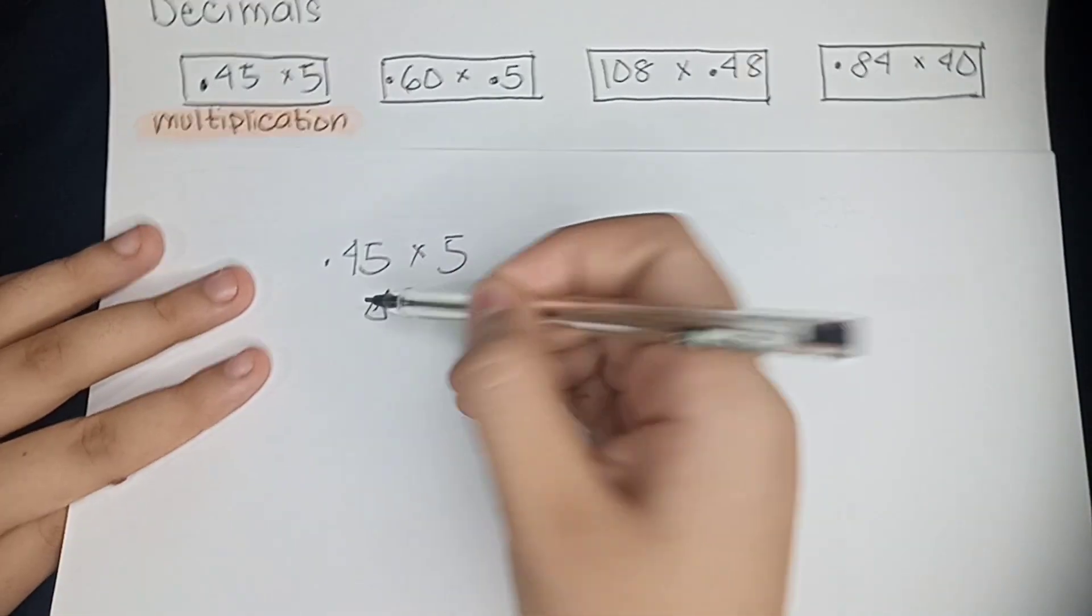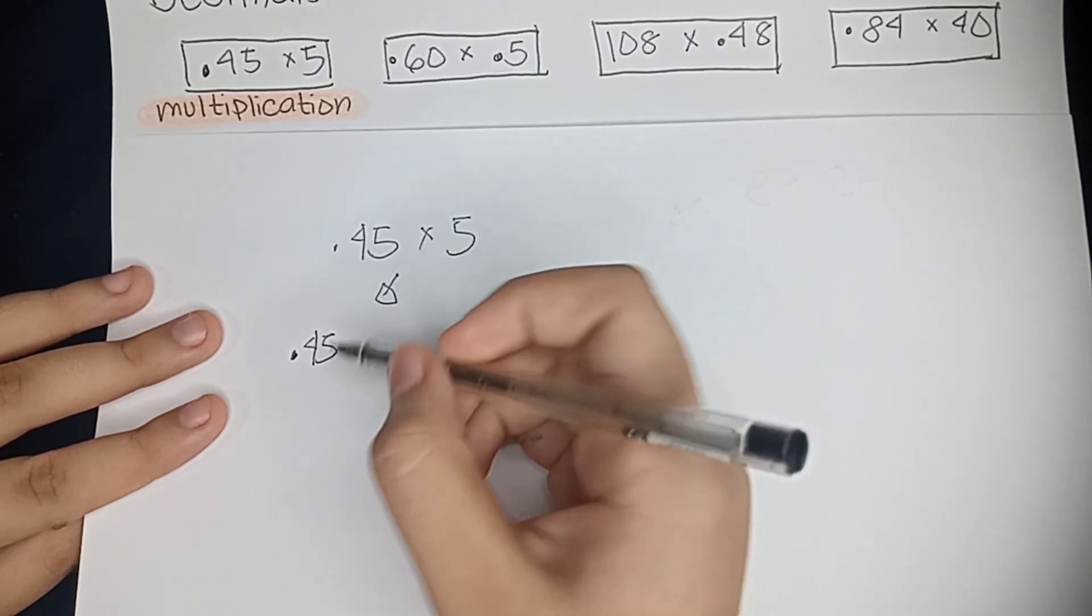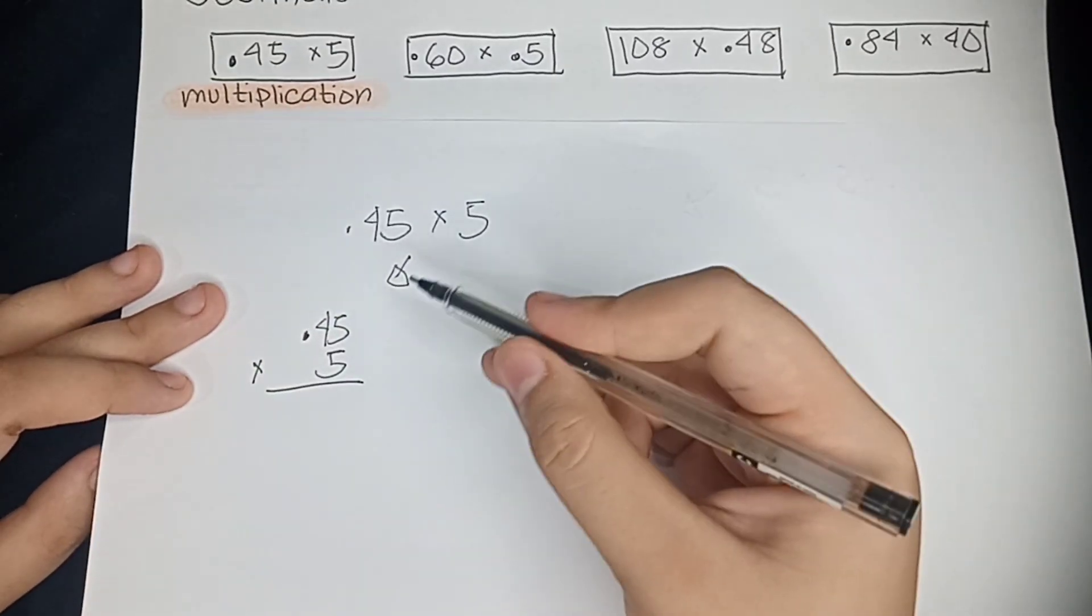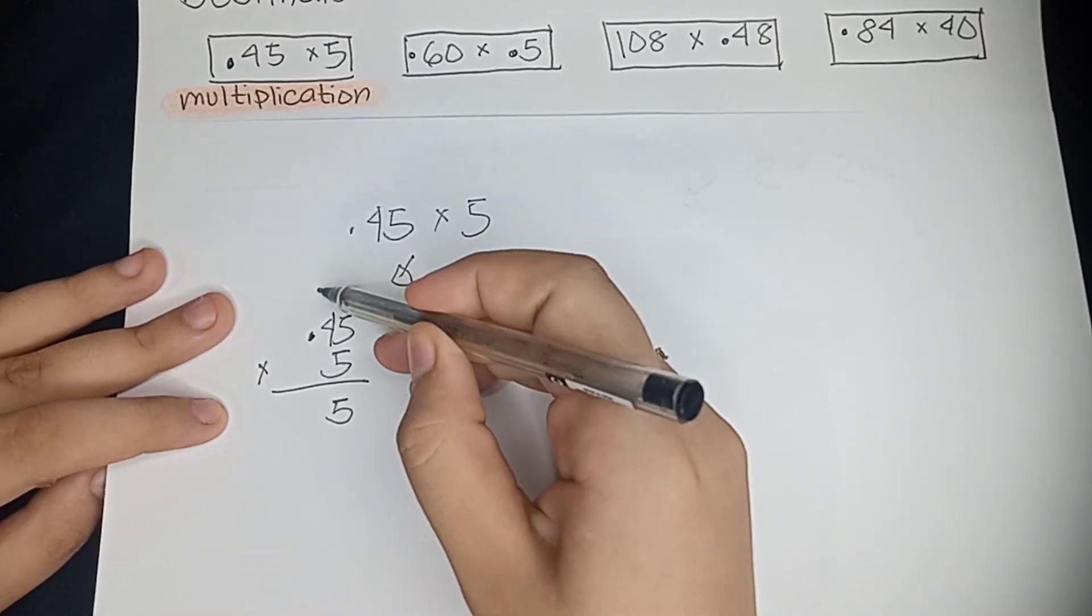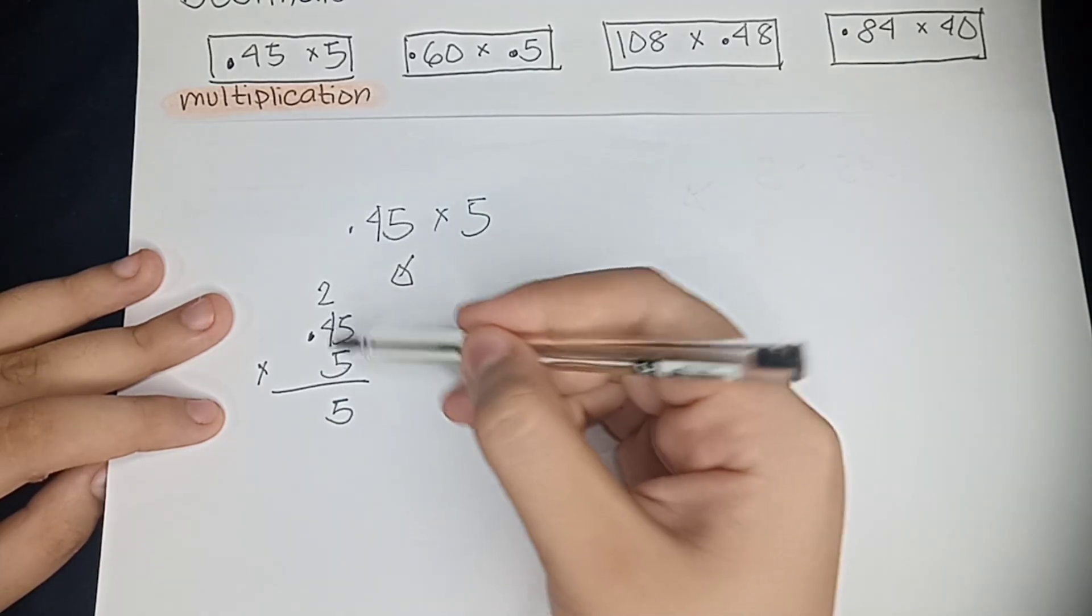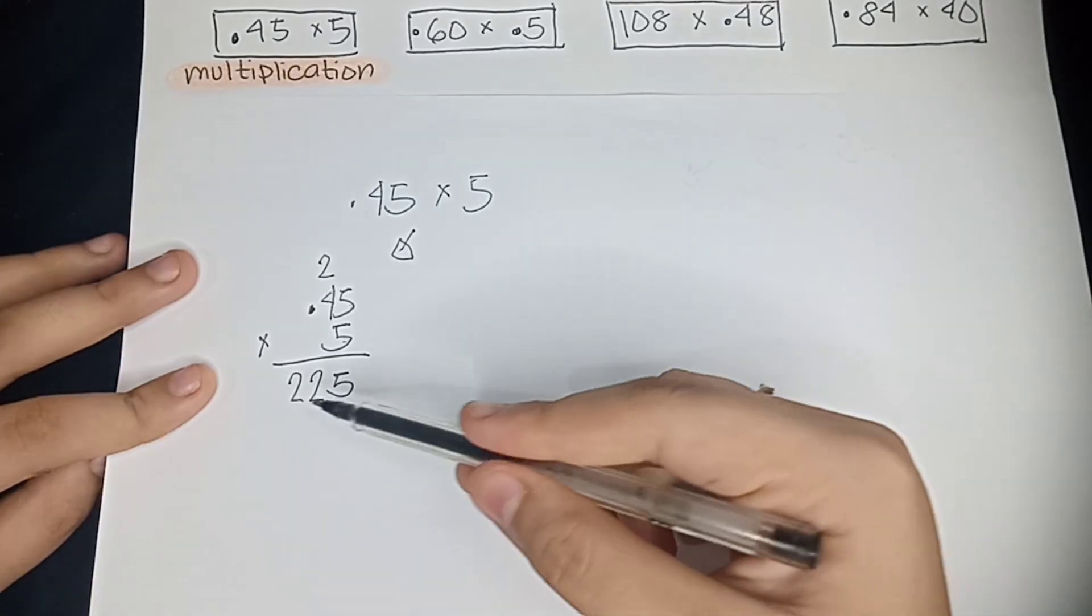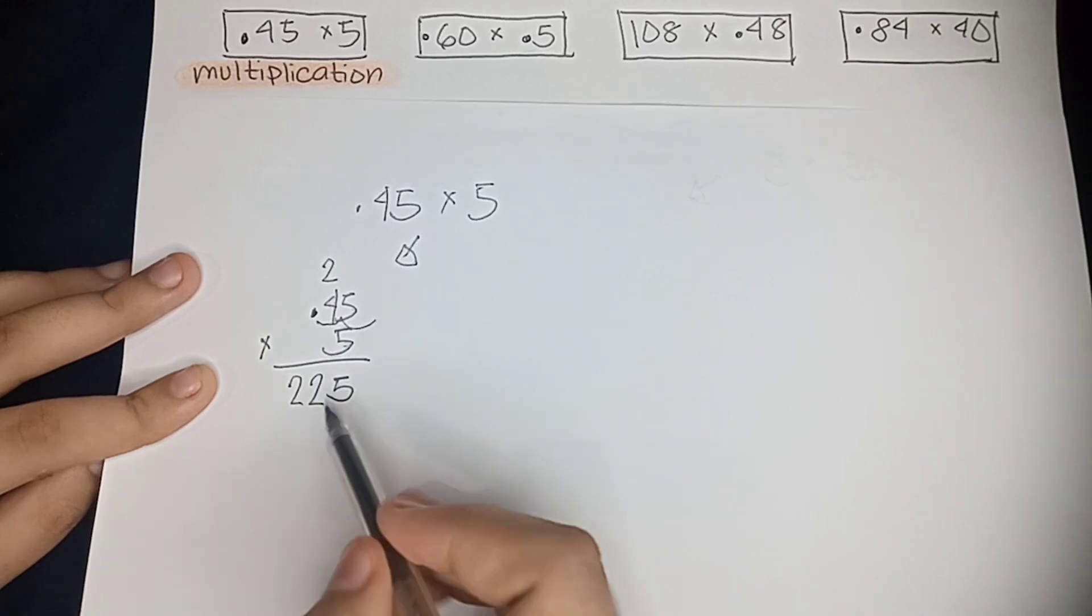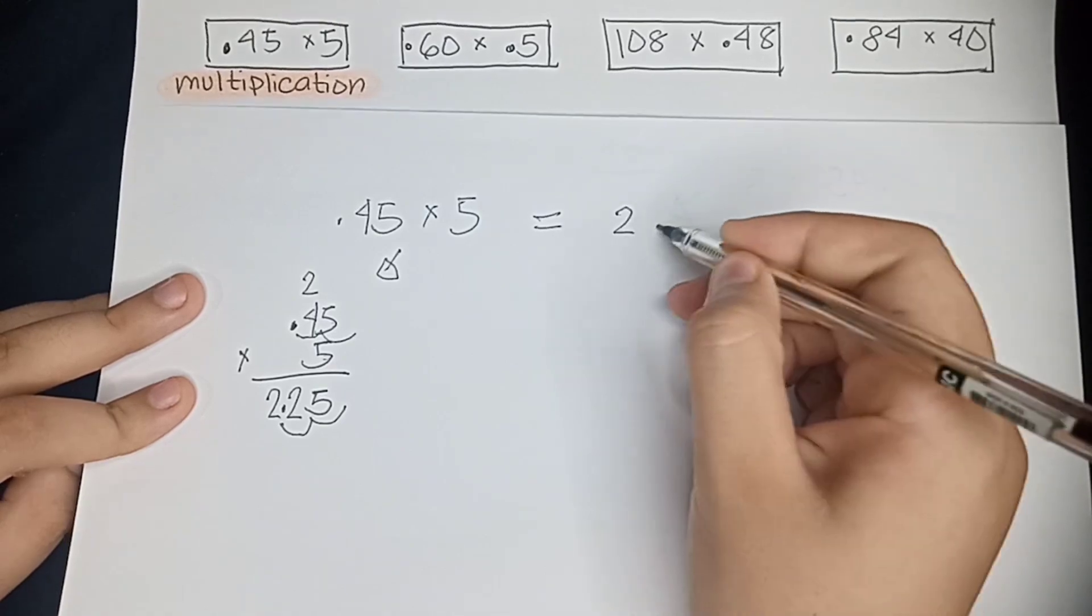So we are going to write 0.45 multiplied by 5 in a way where we could understand it more, or how we do basic multiplication. So 5 multiplied by 5 equals 25, carry the number 2. 5 multiplied by 4 equals 20, plus the 2 that you've carried equals 22. Now we're going to count the numbers to the right of the decimal point, which is 1, 2 movements. So now we're going to add that to the end of the number, which gives us 2.25.